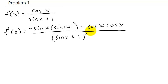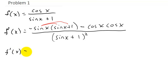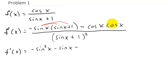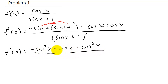Now let's see if we can simplify this a little bit. I'm going to distribute the negative sign, so I get f prime of x equals negative sine squared x, minus sine x, minus cosine squared x, all over the denominator squared.